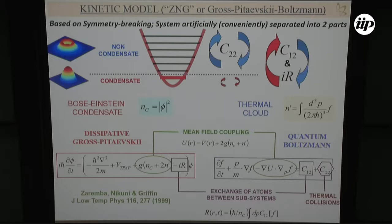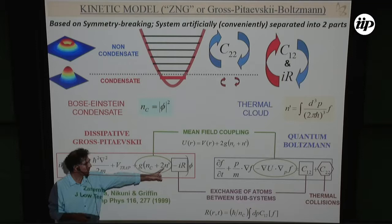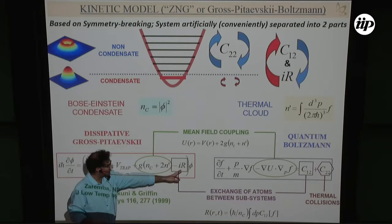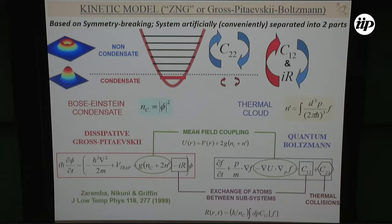The Gross-Pitaevskii equation, the fundamental equation for cold atoms, gets two new terms: one is a mean field correction because the condensate sits in a thermal cloud, and the other is the transfer of particles into or out of the condensate. This is governed by the other equation giving the motion of thermal particles. By construction, I have a closed system of equations with both mean-field and collisional coupling, allowing particle transfer between the two systems.